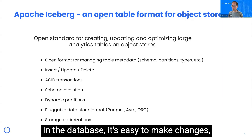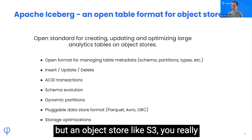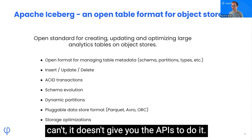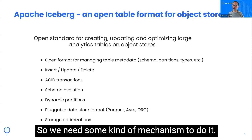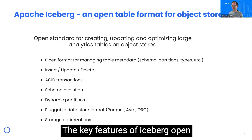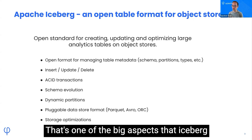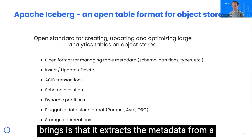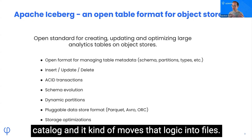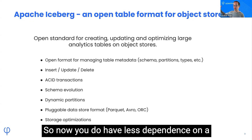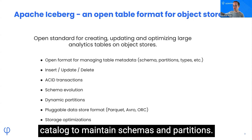In a database, it's easy to make changes, but in an object store like S3, you really can't — it doesn't give you the APIs to do it. So we need some kind of mechanism to do it. One of the key features of Iceberg is an open format for managing metadata. It extracts metadata from a catalog and moves that logic into files.